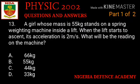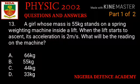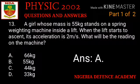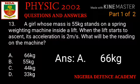Question number thirteen: a man of 55 kg stands on a spring weighing machine inside a lift. When the lift starts to ascend, its acceleration is 2 meters per second squared. What will be the reading on the machine? Option A: 66 kg. Option B: 55 kg. Option C: 44 kg. Option D: 33 kg. The right answer is option A — 66 kg.